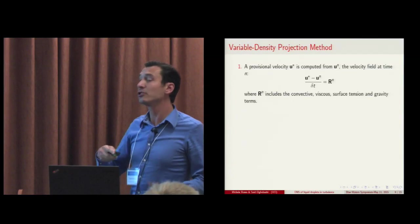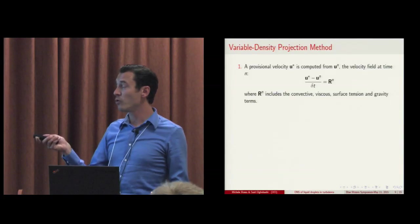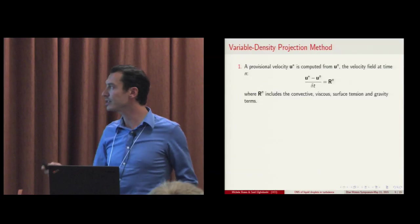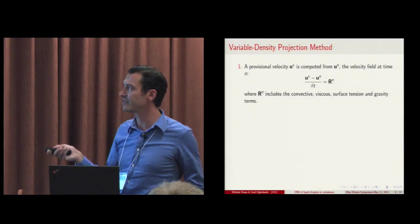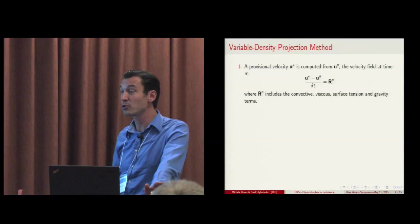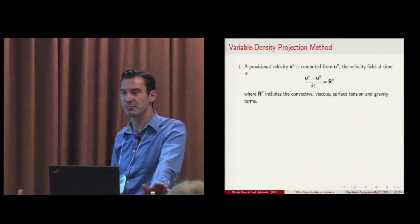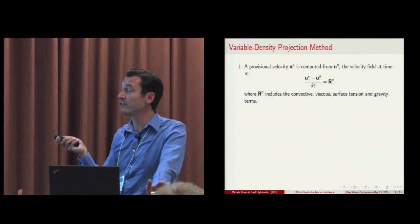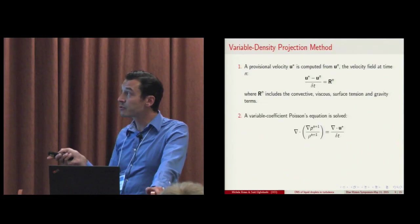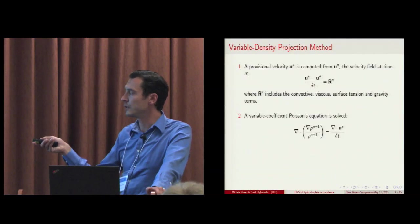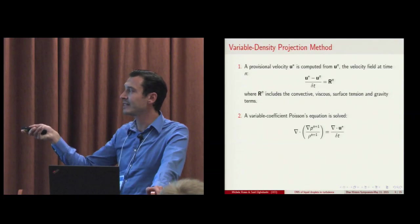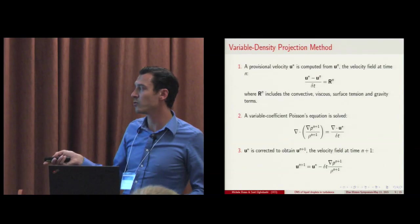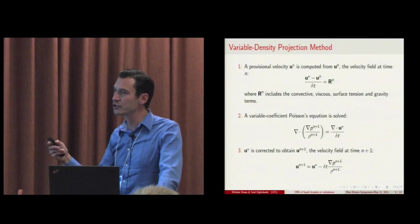Now, in order to advance the solution, we have to adopt a variable density projection method. So the main idea is to first advance for one time step the Navier-Stokes equation, the momentum equation, without considering the pressure gradient. And this will allow us to compute a provisional velocity u star. This provisional velocity is then used to build a right-hand side for a variable coefficient Poisson equation. And the solution of this variable coefficient Poisson equation allows us to compute the pressure at the next time level.